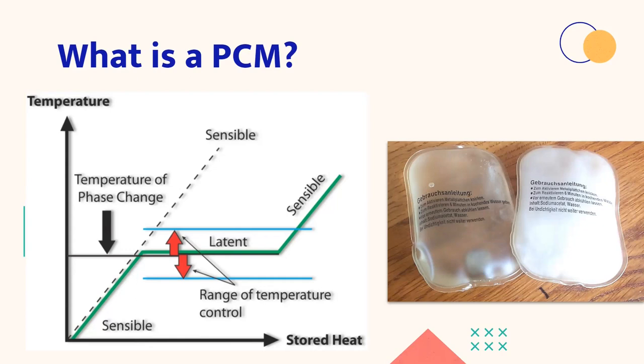The temperature of the PCM increases till the time it reaches its melting point. Then due to latent heat of vaporization, the temperature becomes constant. And after the PCM is fully melted, the temperature further increases.